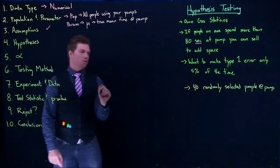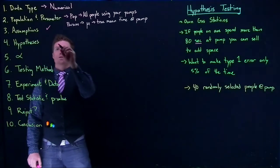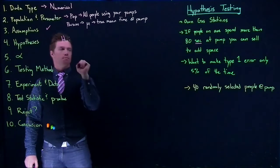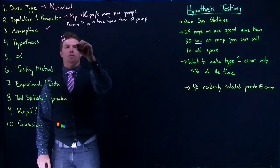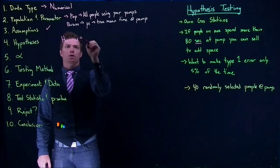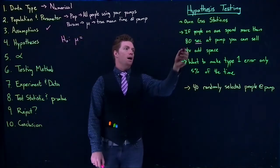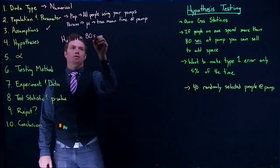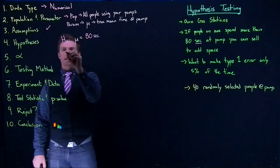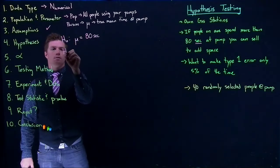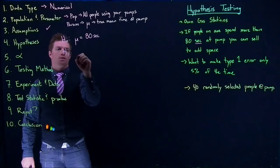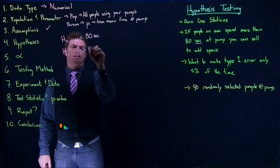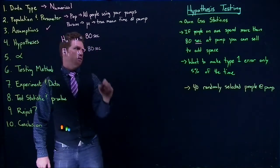Next we state our hypotheses. The null hypothesis is that the true mean is equal to our hypothesized mean of 80 seconds. Our alternative hypothesis is that mu is actually greater than 80 seconds.